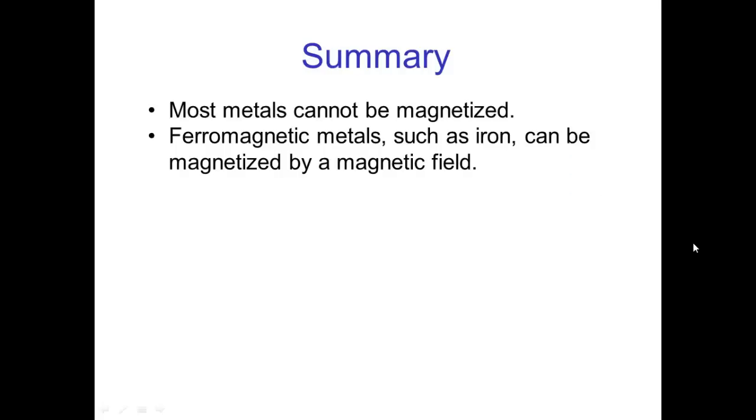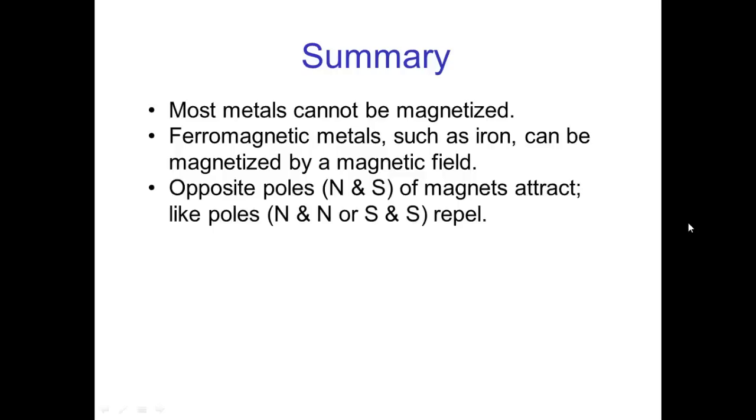So, in the summary, most metals cannot be magnetized. Ferromagnetic metals such as iron can be magnetized by a magnetic field. Opposite poles north and south of magnets attract like poles north and north or south and south repel.